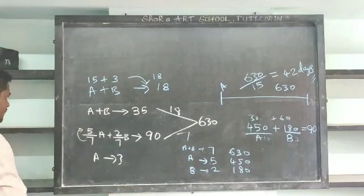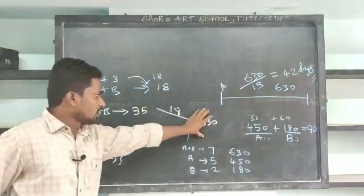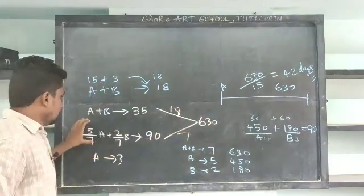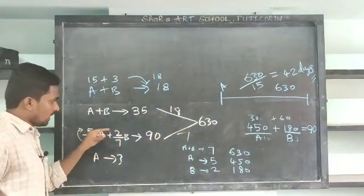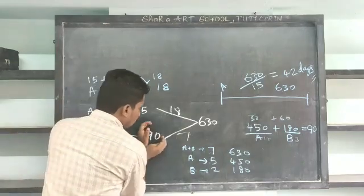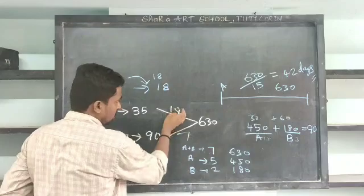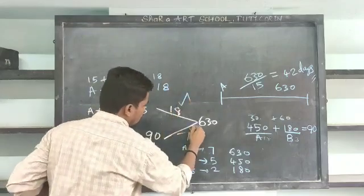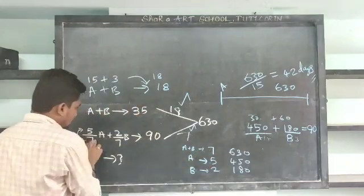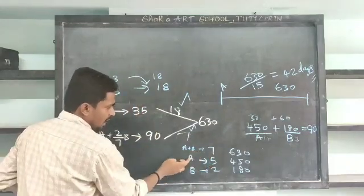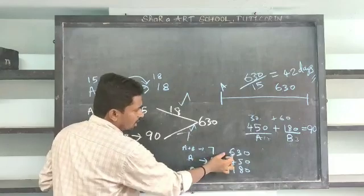A equals 50. The same work is a total work. What 5 is the total work. Now, this is efficient. This is our efficiency. A and B are 7 parts. A and B are 2 parts. A and B are 680.